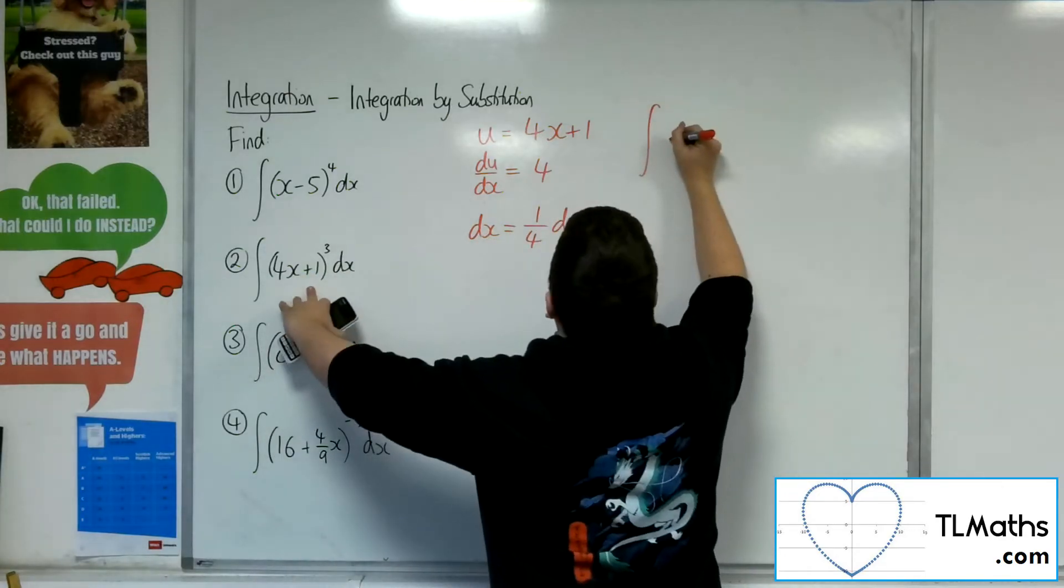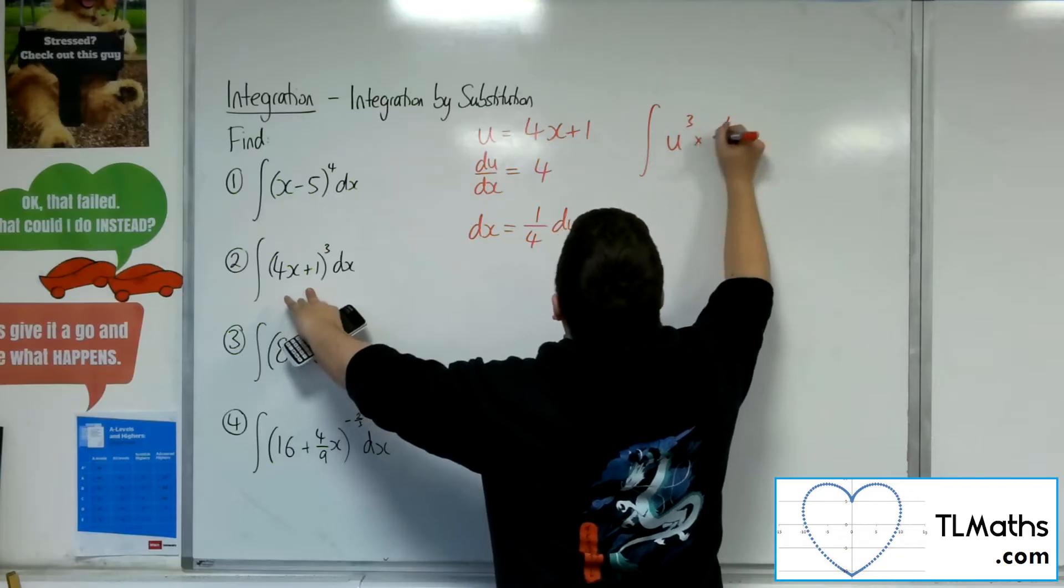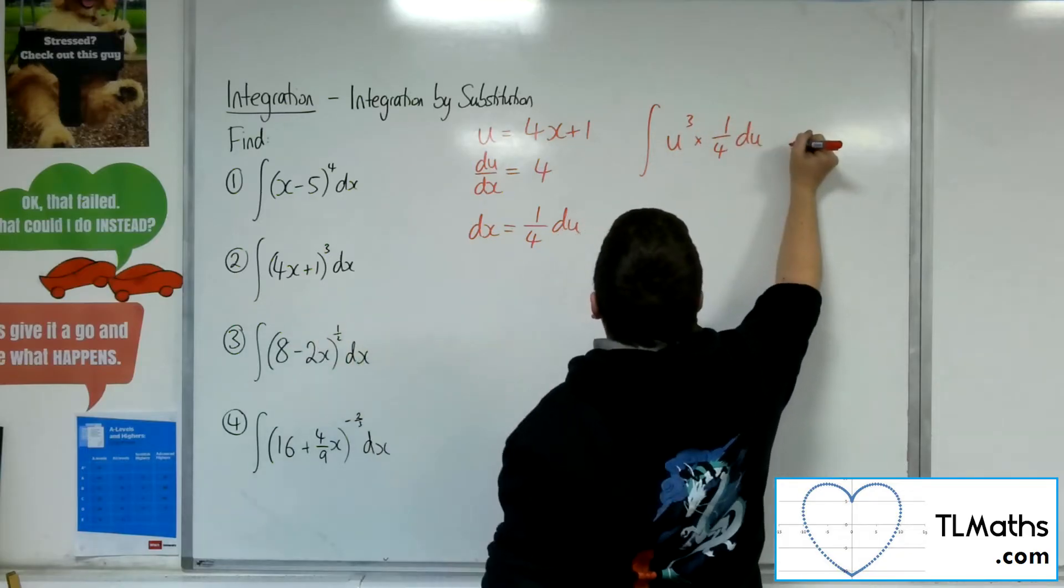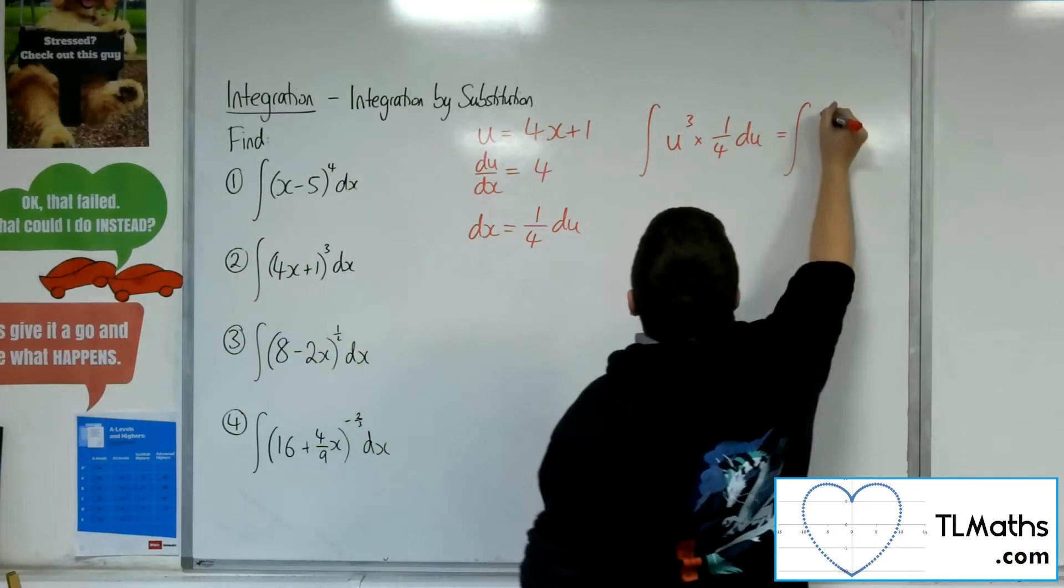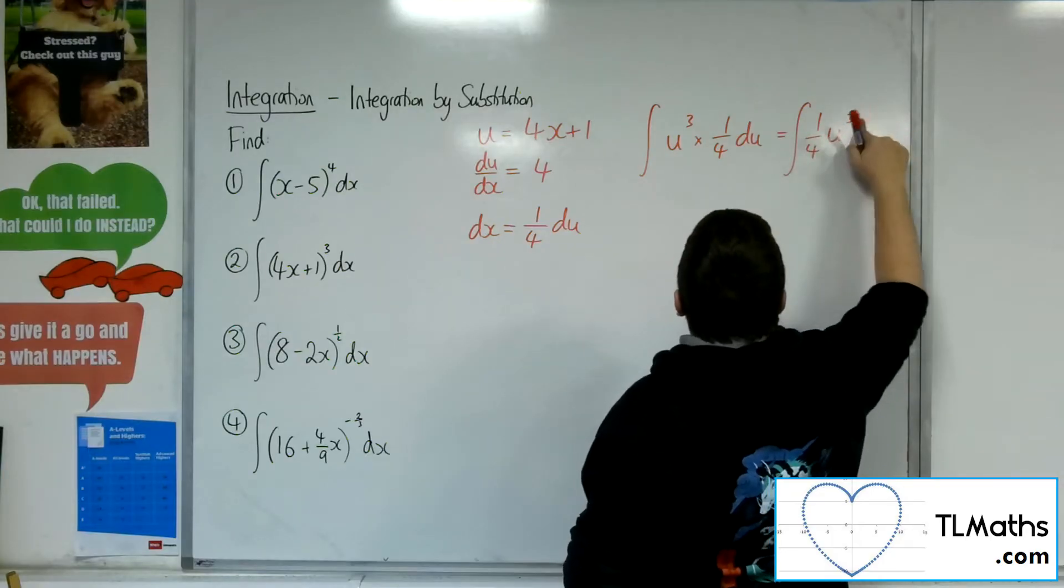So we have the integral of u cubed times 1 quarter du. If I tidy that up, I've got the integral of a quarter u cubed du.